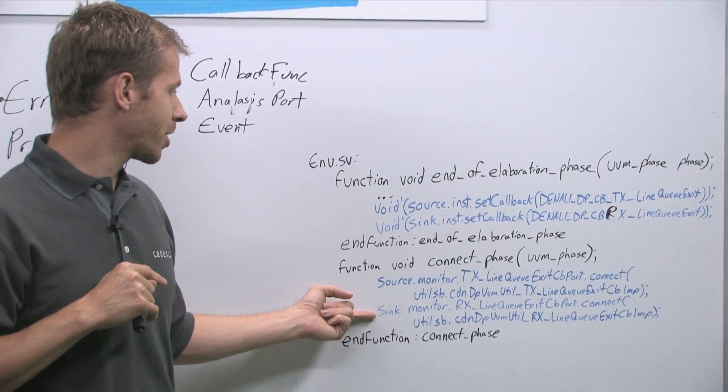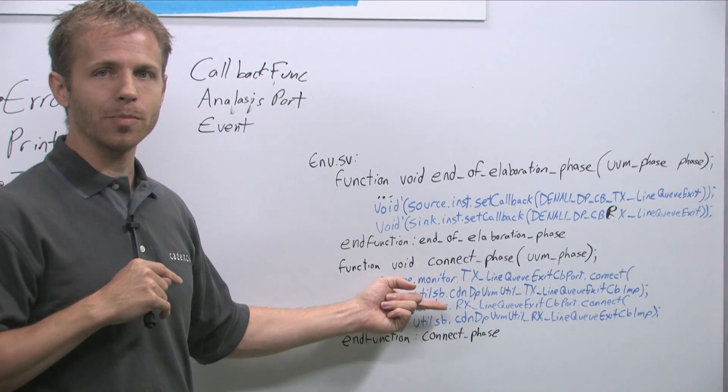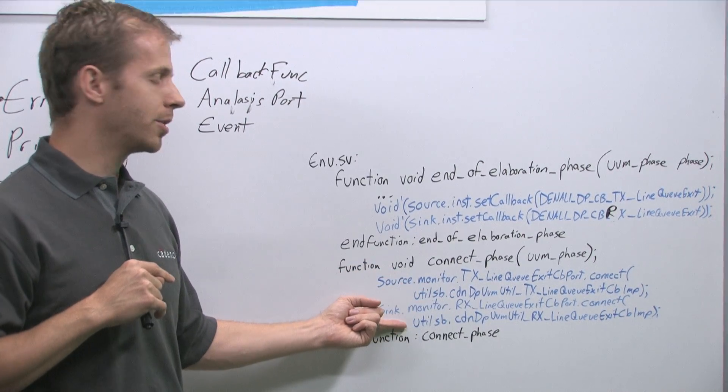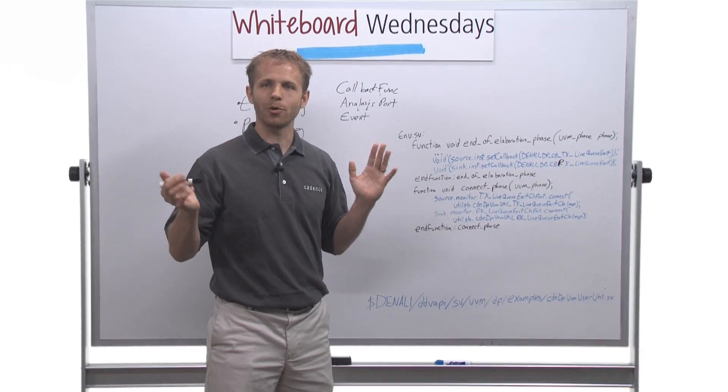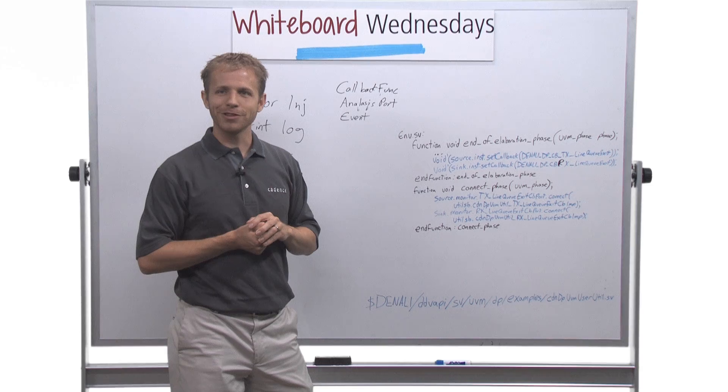And for the sync monitor, we're connecting the RX line queue exit callback port to the scoreboard's implementation of the same. So those three things, we have our scoreboard, it's connecting, it's working, you're good to go.